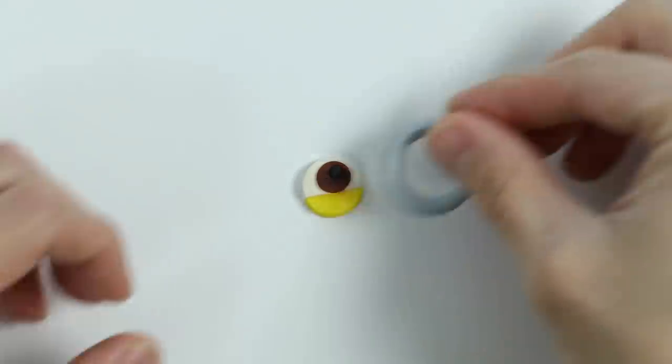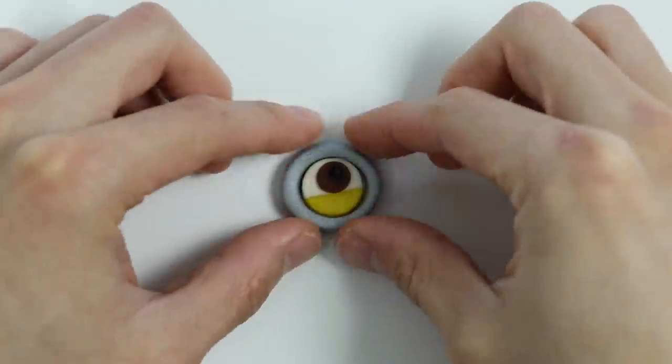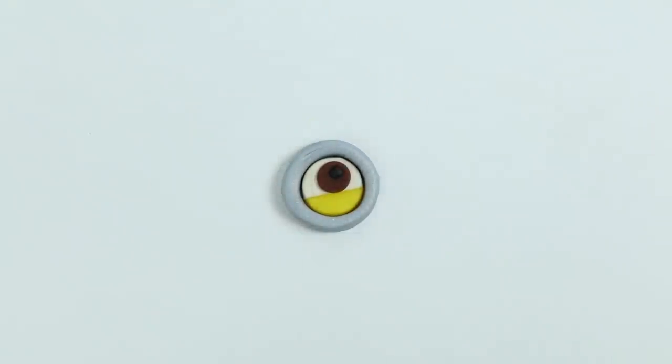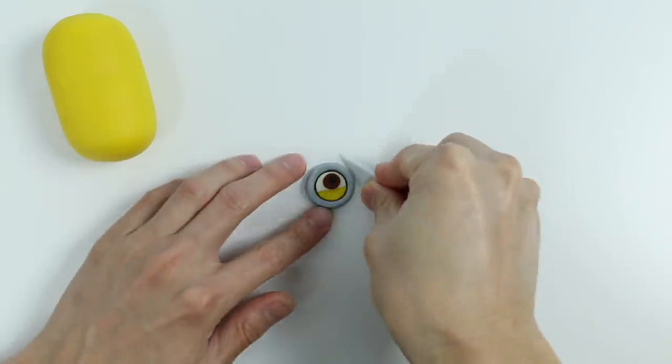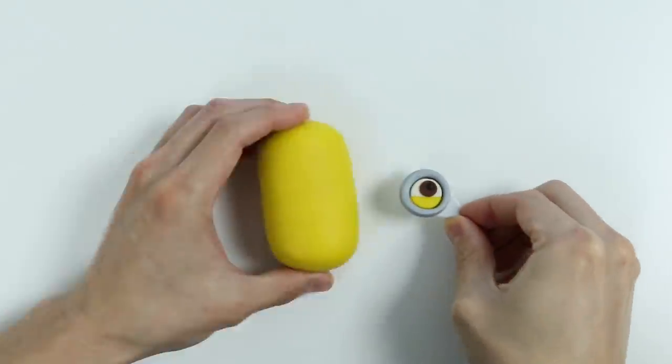Now let's attach Minion Stewart's work goggle. Alright, since Minion Stewart only has one eye, we'll attach it right on the center.